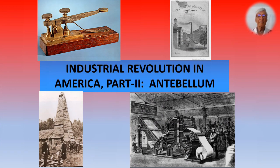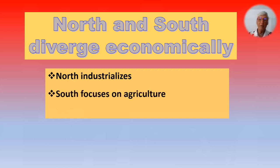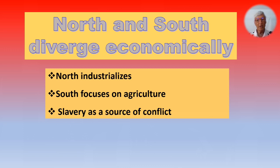Let's begin our exploration of the second part of my look at the industrial revolution in the United States, which made such a huge difference in all of our lives, even today. What happened during this period before the Civil War, between roughly 1800 and 1860? First of all, North and South diverged dramatically economically. The North became the industrial powerhouse. Meanwhile, the South focused on agriculture. But in the background, slavery was a source of conflict that would only increase as the decades of the early 19th century unfolded.